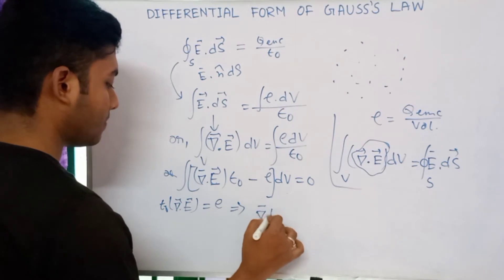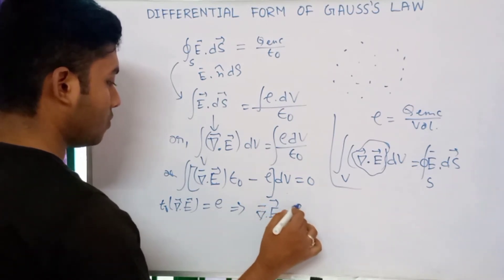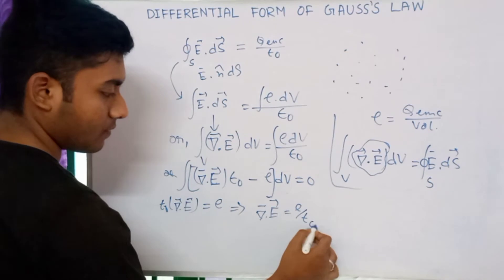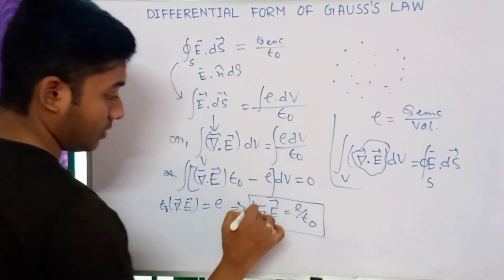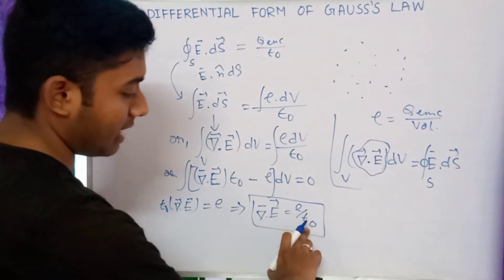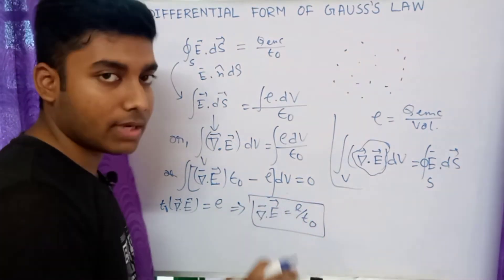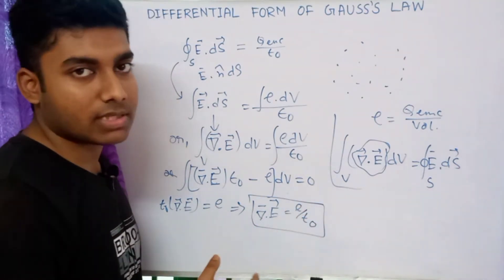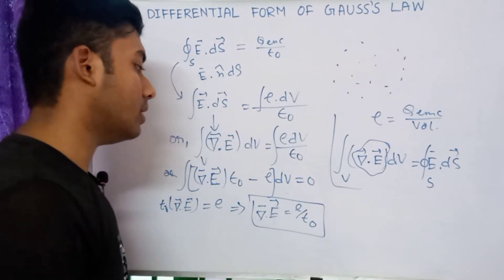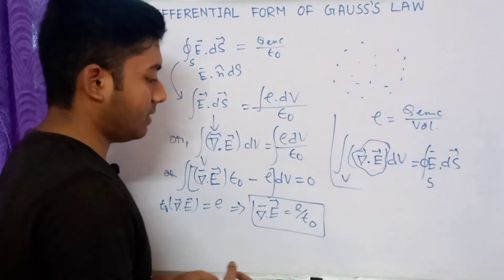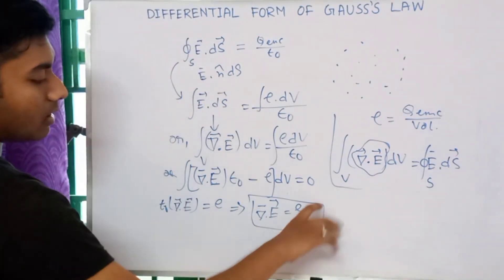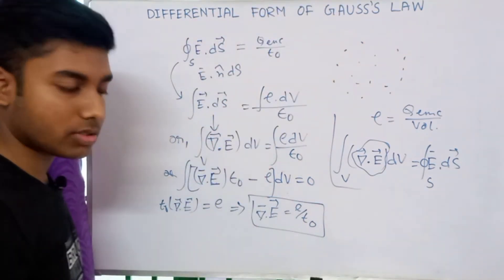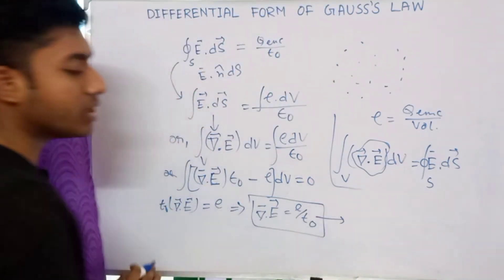This gives us del dot E times epsilon naught equals rho, which means del dot E equals rho over epsilon naught. This is the differential form of Gauss's Law — a very important equation in electrostatics. For free space, epsilon naught applies; for a dielectric medium, epsilon naught is replaced by epsilon (the relative permittivity).